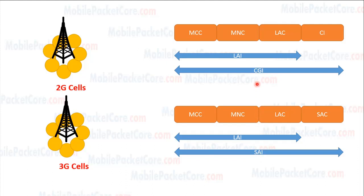The Cell Global Identifier, CGI, consists of the LAI in addition to the Cell Identity, CI. While the Service Area Identifier, SAI, consists of the LAI in addition to the Service Area Code. The Service Area Identifier may contain more than one cell, and every cell is identified by Cell ID.